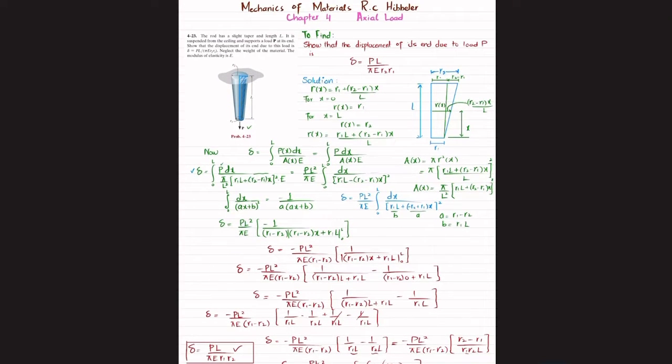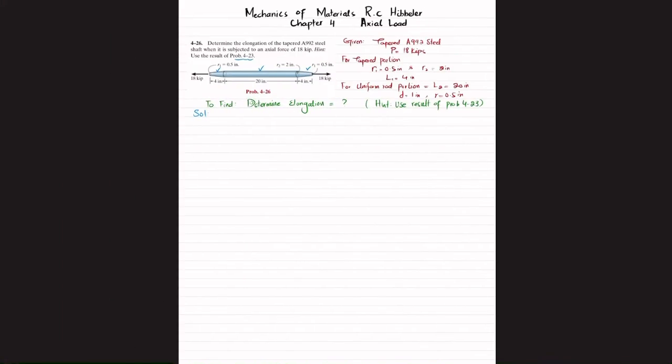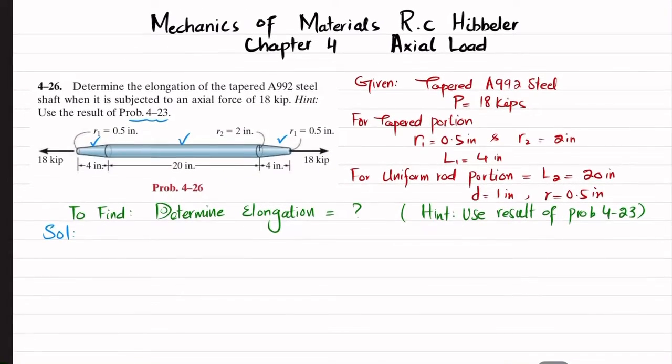From here, this is a tapered portion that is acted upon by a tensile load or axial load. So deformation in this tapered portion is given by this formula: PL divided by pi times E times R1 times R2. This is for tapered portion only.